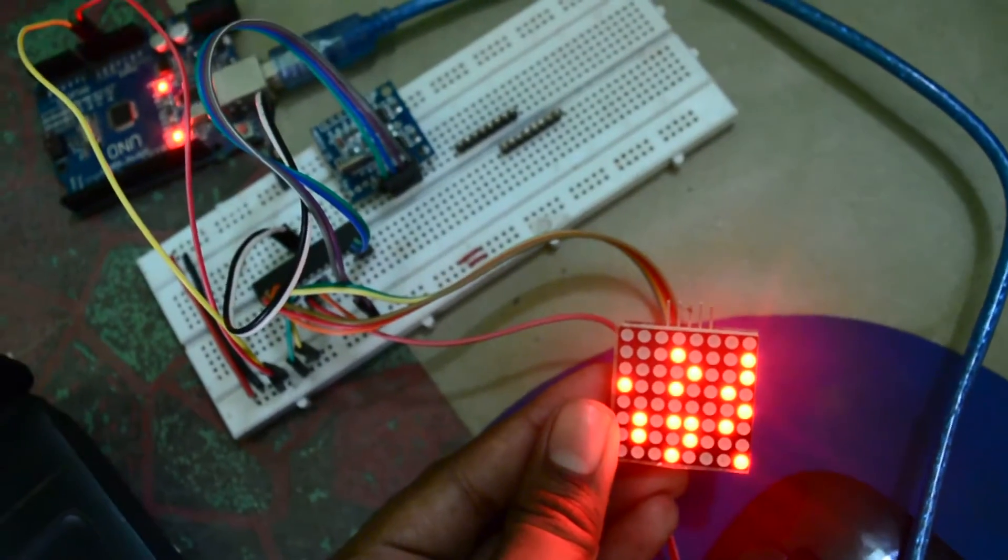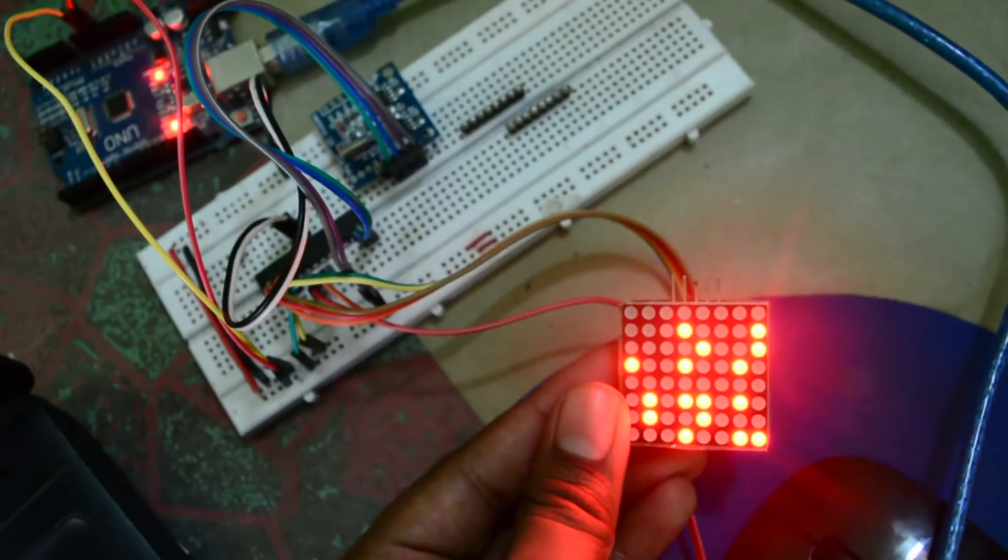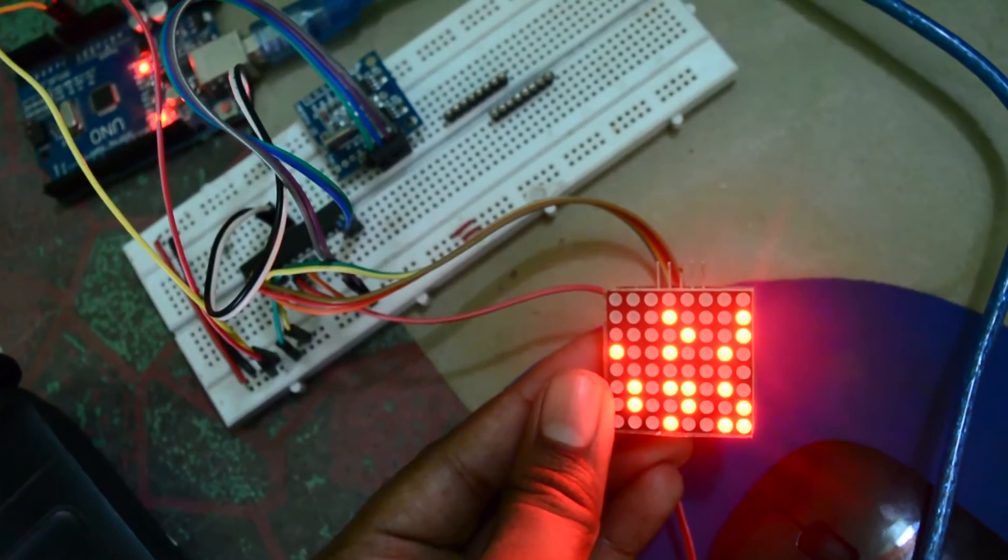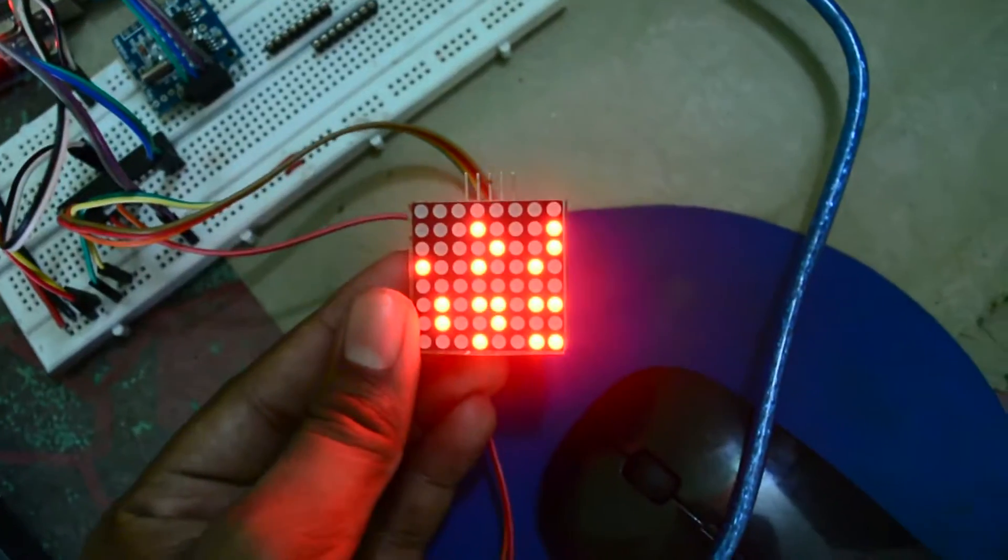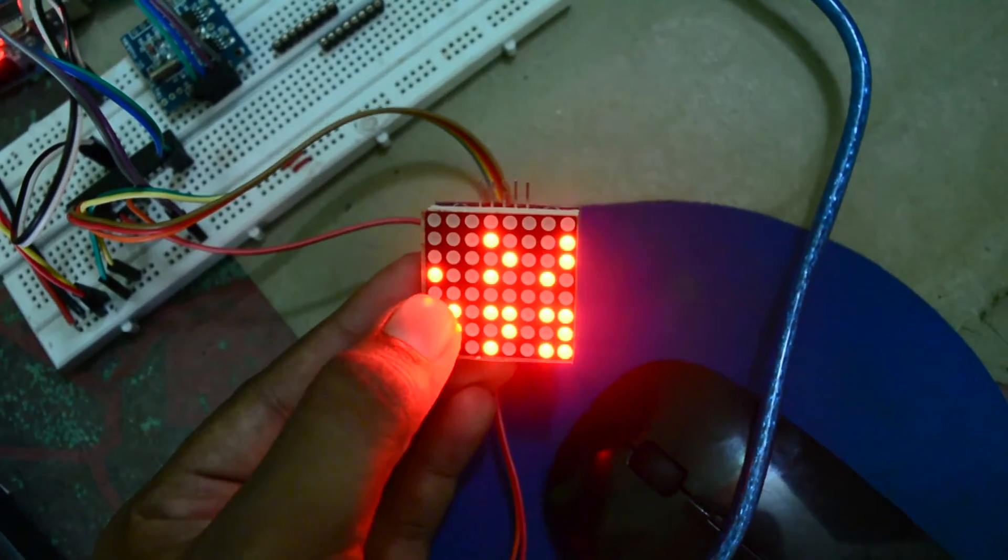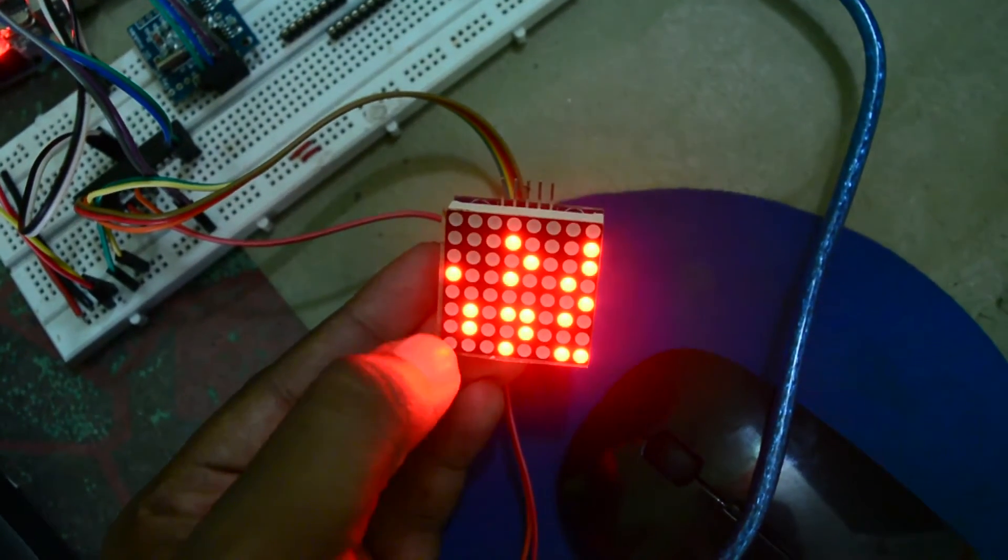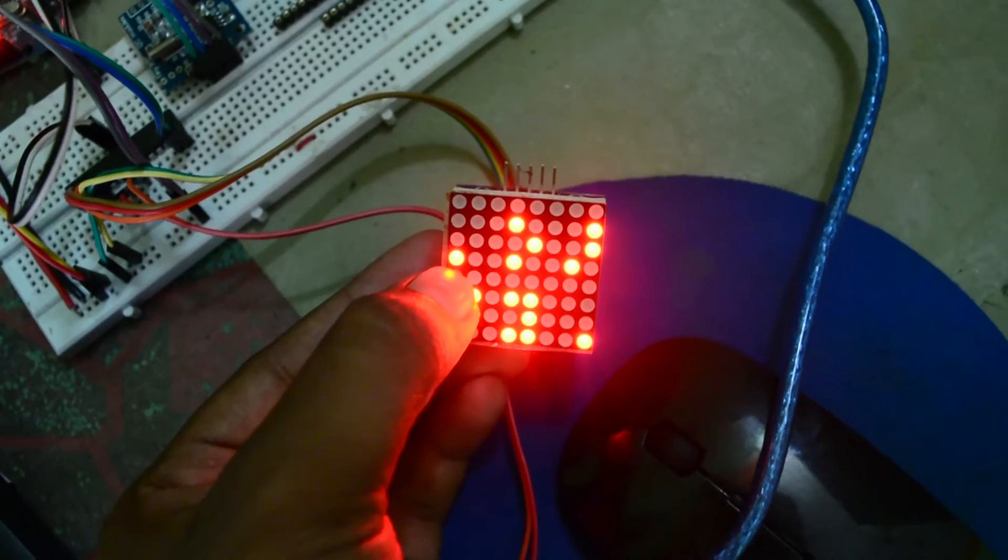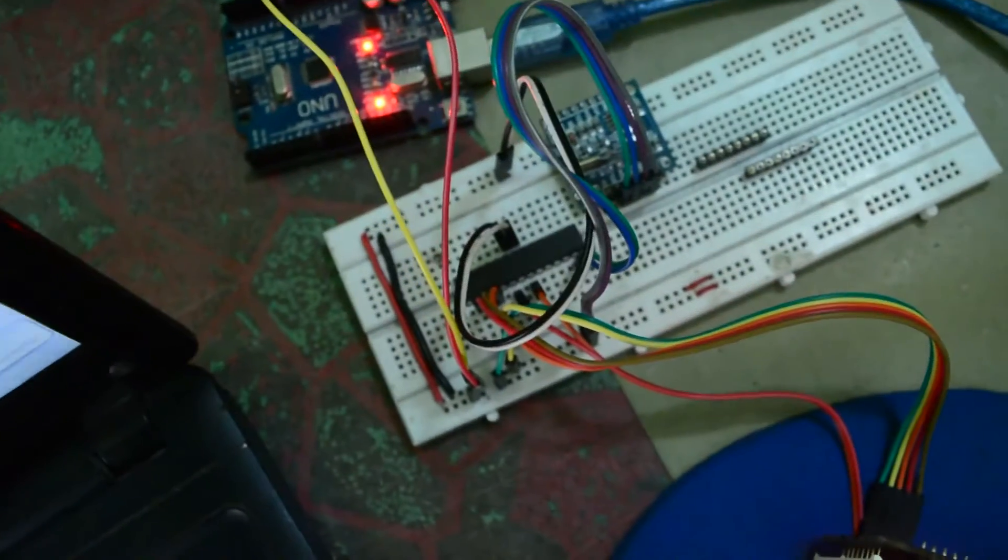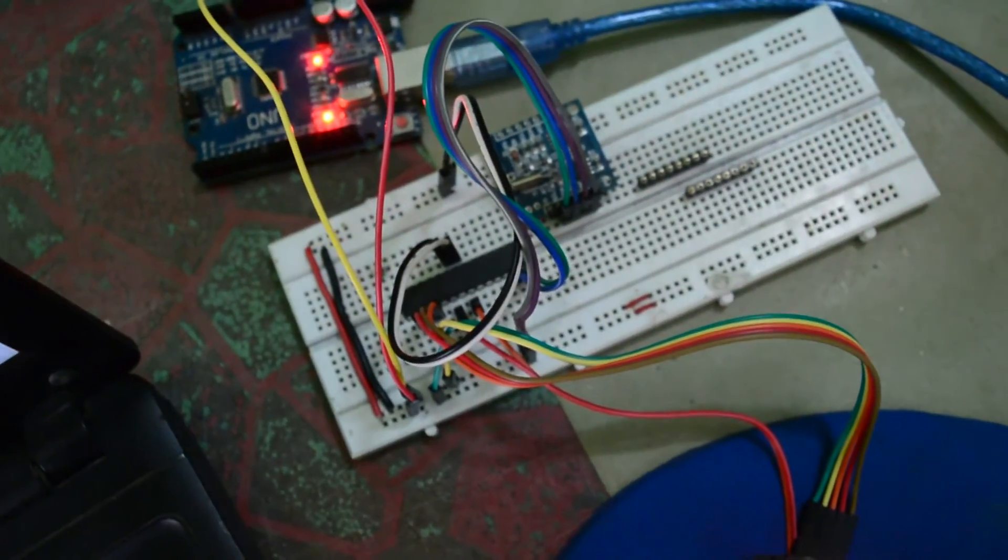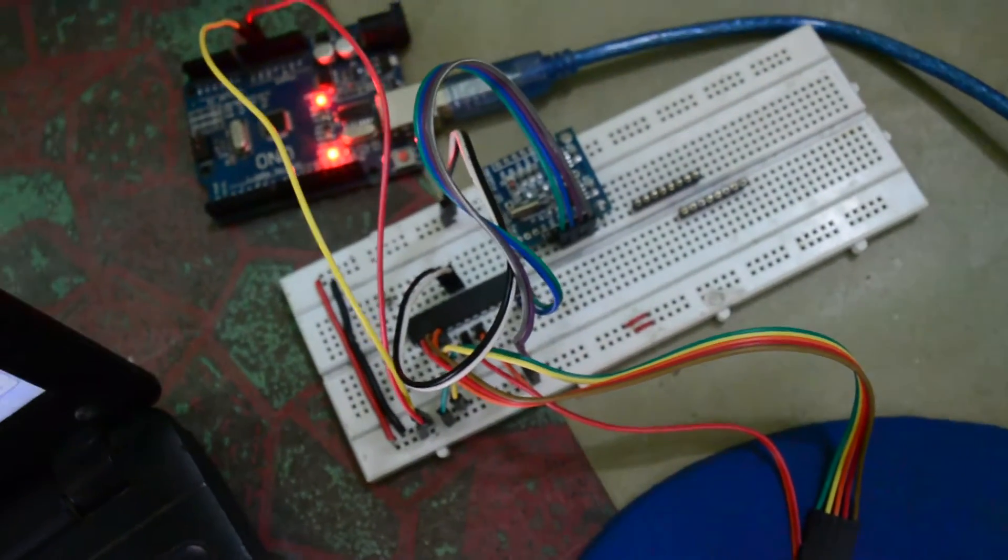So I will program the ATmega 328. I will skip the Arduino part for the video. And the clock works fine. First four rows show the time and the top four rows show the date. So I will post the wiring and code somewhere for you guys to refer.